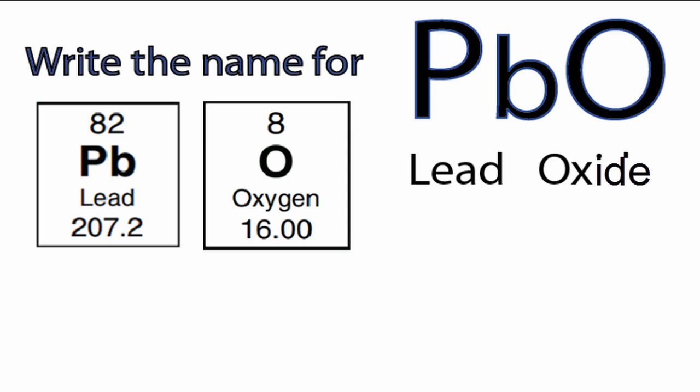We have a bit of a problem though, because lead can be Pb²⁺, but it can also be Pb⁴⁺. Oxygen on the other hand is always -2.